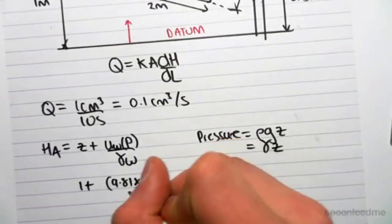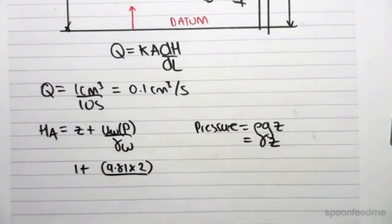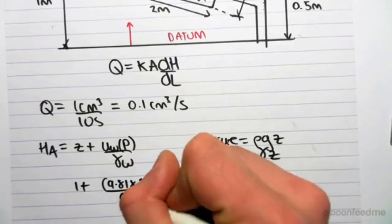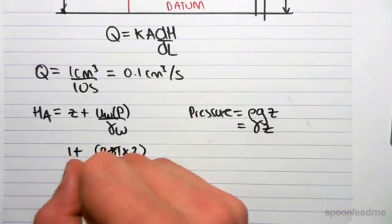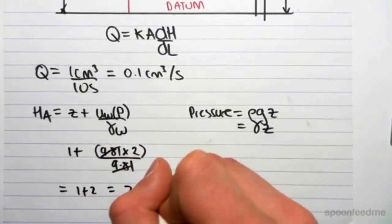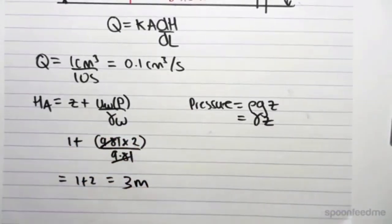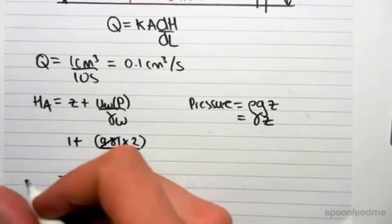So it's times 2 on the gamma of water. And the gamma of water is 9.81. So that is going to cancel, which means we're going to be left with 1 plus 2, which is 3 m. So that's the head at A.